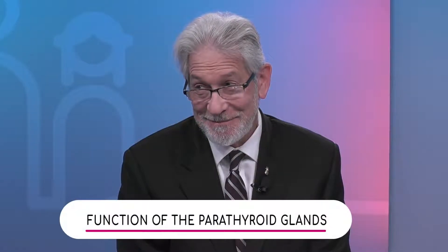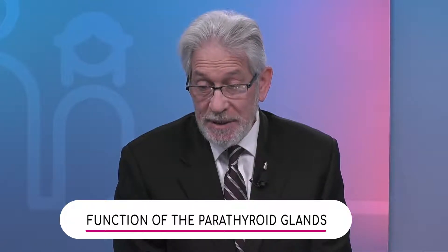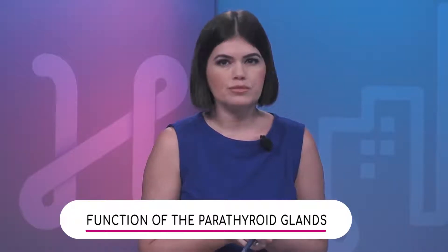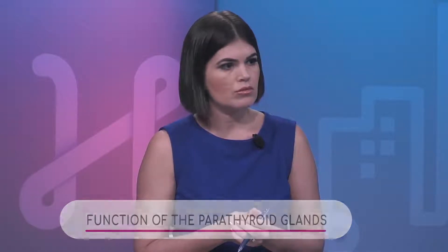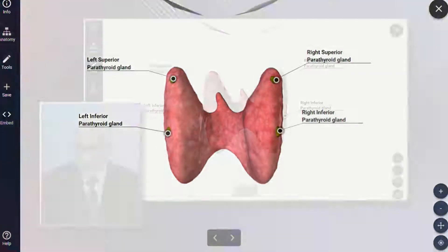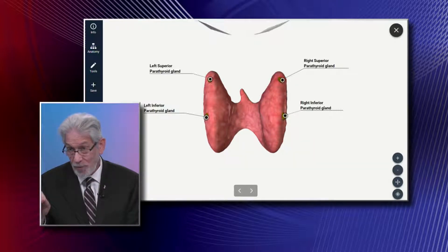We also have what is called the parathyroid glands. Where are these in relation to the thyroid and what's their function? They're important glands. 'Para' means next to, so parathyroid means next to the thyroid. They're located on the posterior portion, behind the thyroid gland. Normally there are four, and they control calcium metabolism by secreting parathyroid hormone.